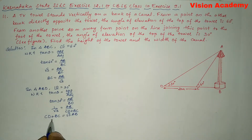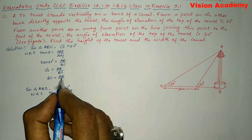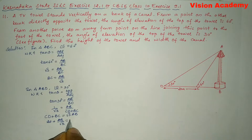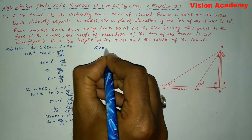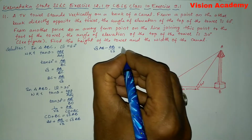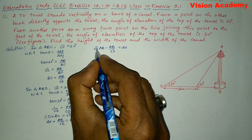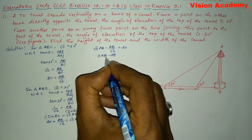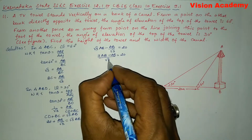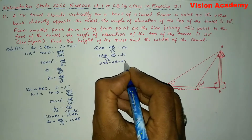Now substituting the values: CD is 20 meters, and BC = AB/√3. So 20 + AB/√3 = √3 · AB. Transforming AB/√3 to the right-hand side: √3 · AB − AB/√3 = 20. Taking LCM: (3AB − AB)/√3 = 20, which gives 2AB = 20√3.